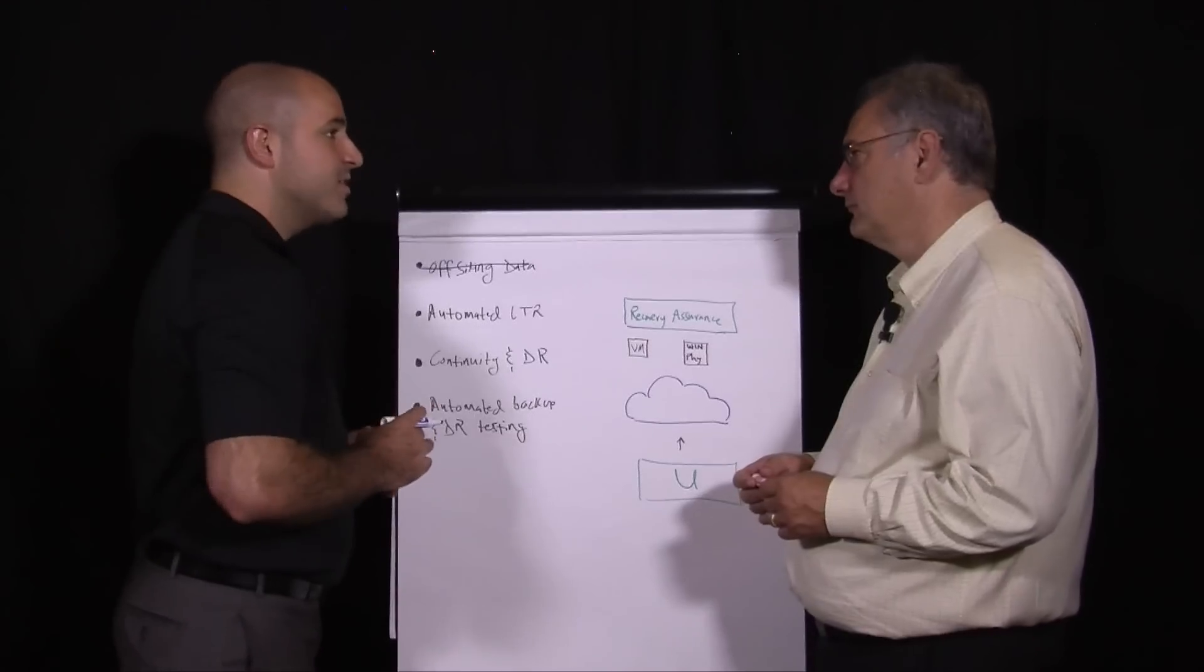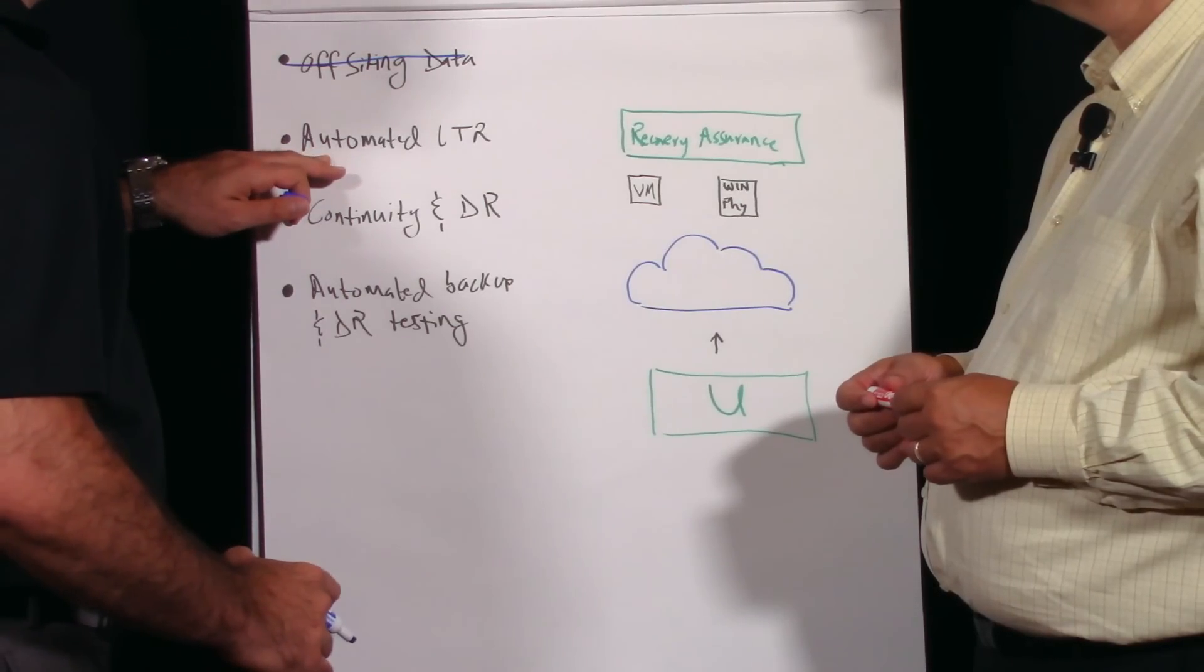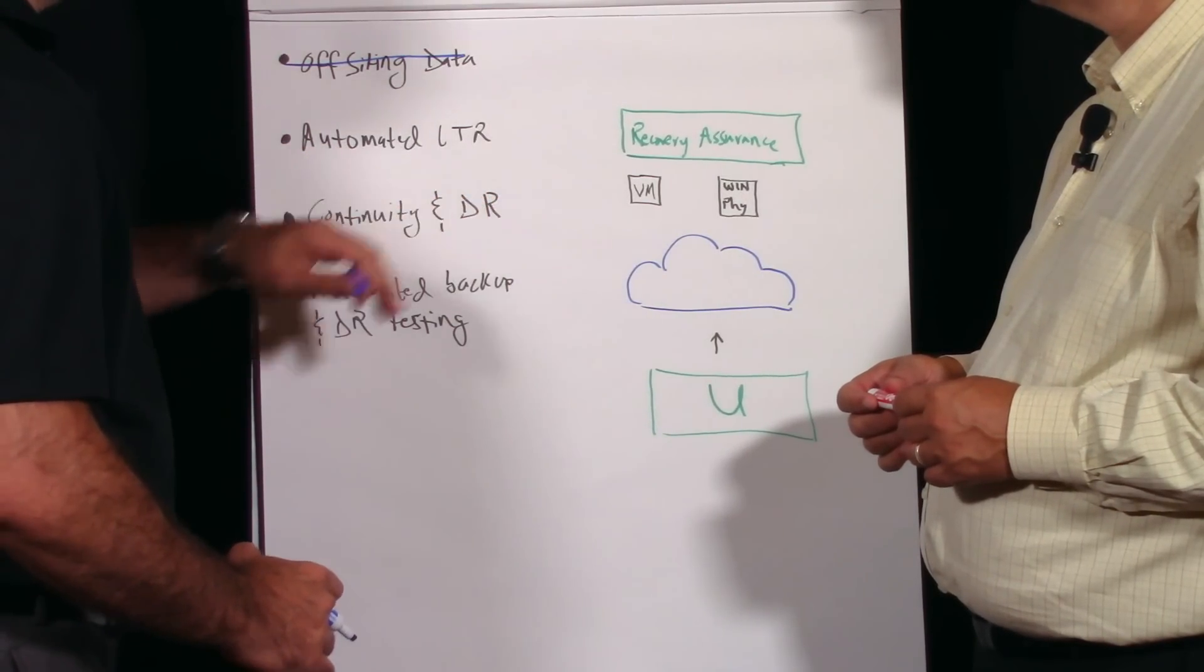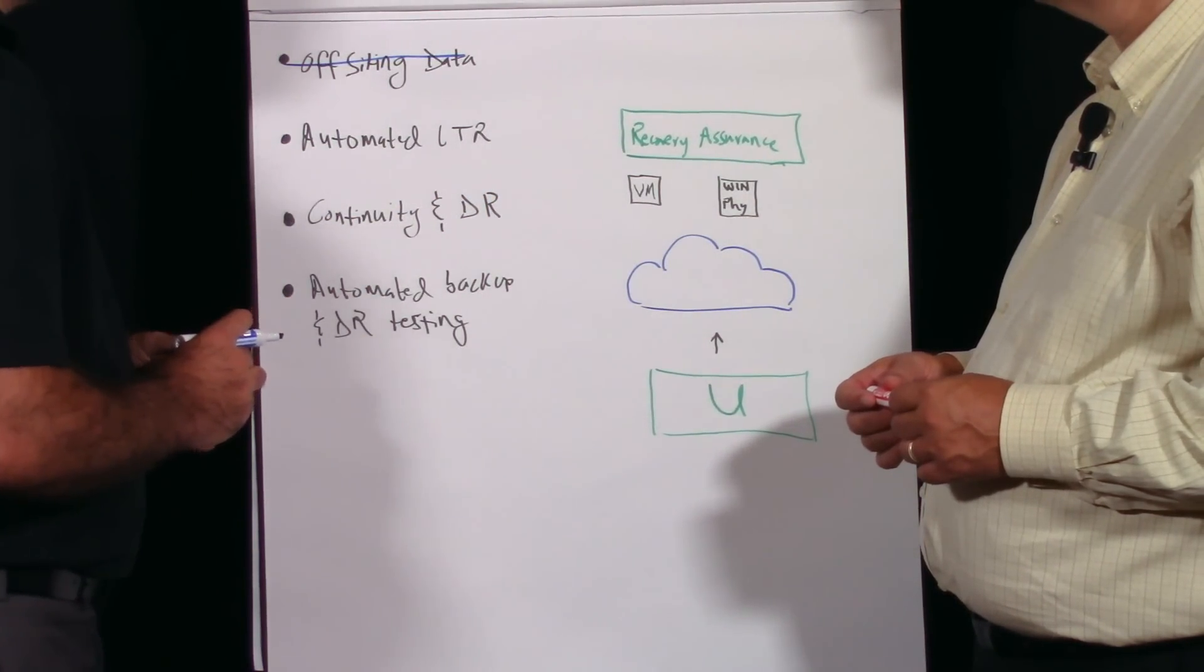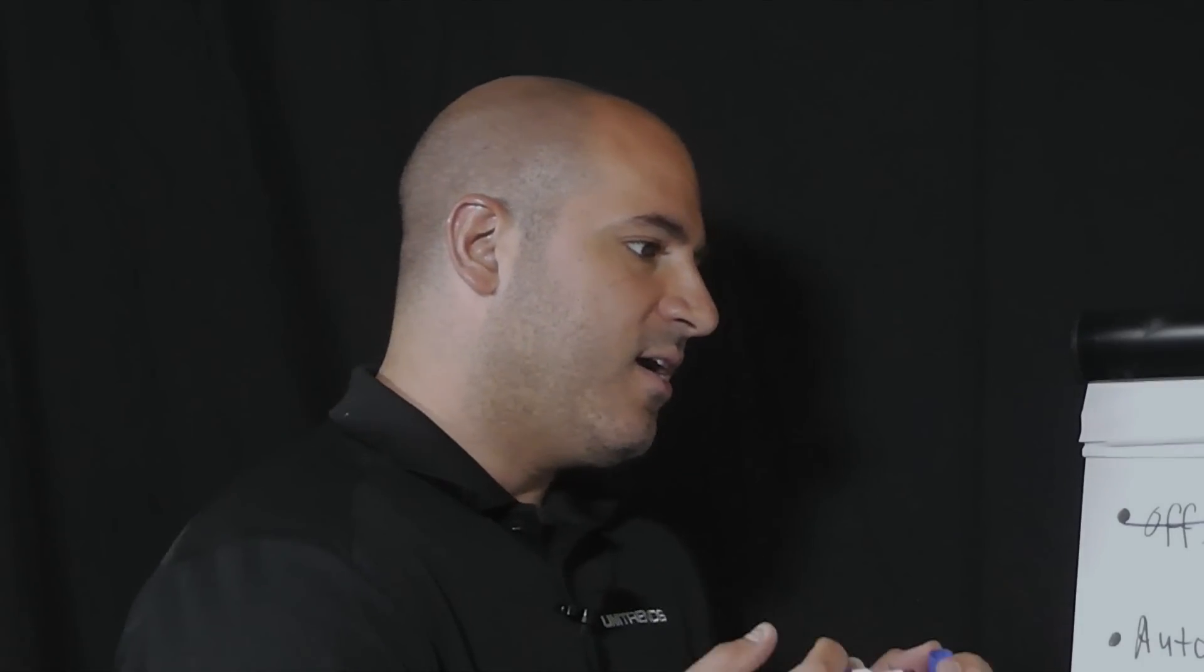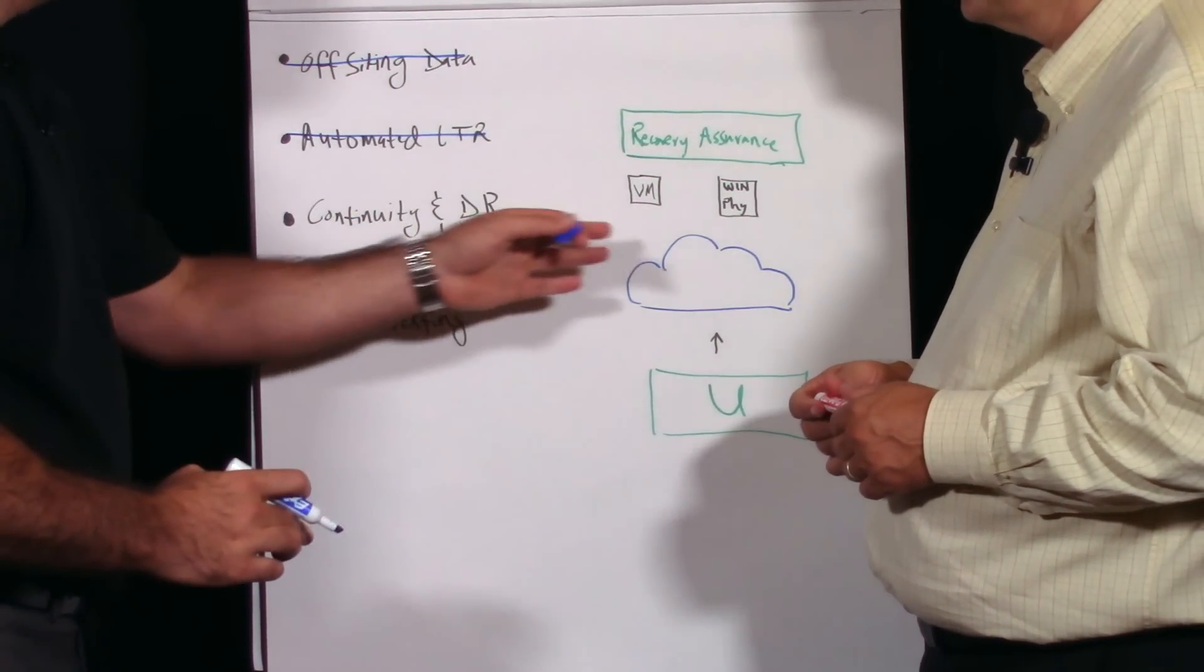The customer is able to cross that off in that they're able to take the data somewhere else, not just my local data center, but we're also automating that long-term retention. Not only are we putting a copy of the data in our cloud, we're introducing a unique offering we call forever cloud where we're literally offering GFS grandfather father son type retention in the cloud where data is kept forever. So that's automated and it's kind of wrapped into off-siting that data together into one.